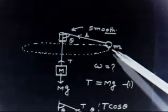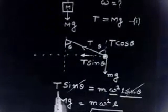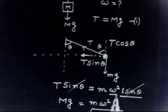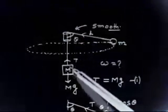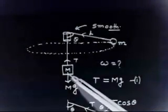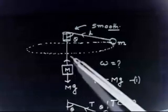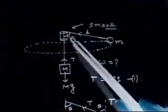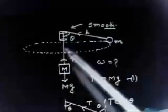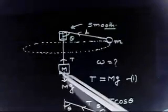Now see what happens if we increase omega. If we increase omega, the tension will increase, so T is no longer equal to Mg — the radius will increase, meaning m will move in a bigger circle. So if omega is changing with time, you can find the acceleration of the capital mass M accordingly.